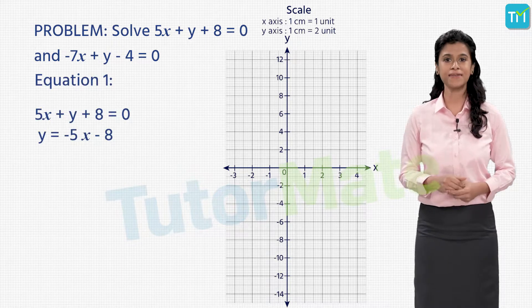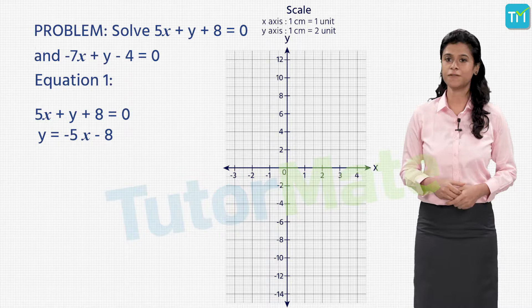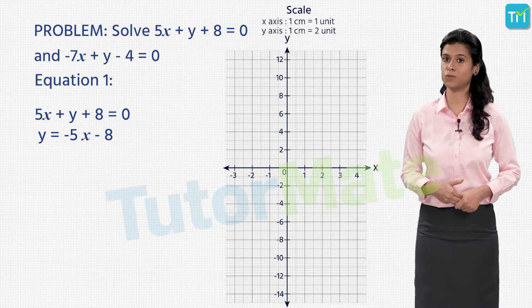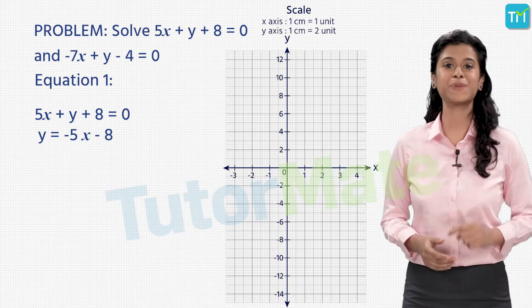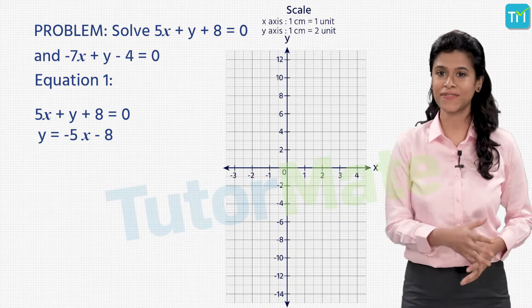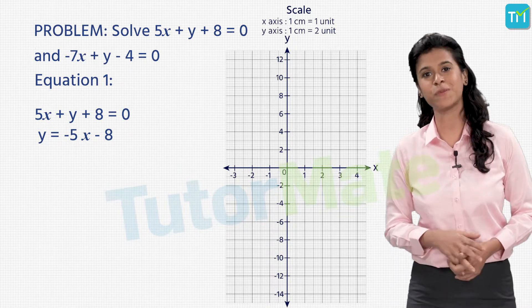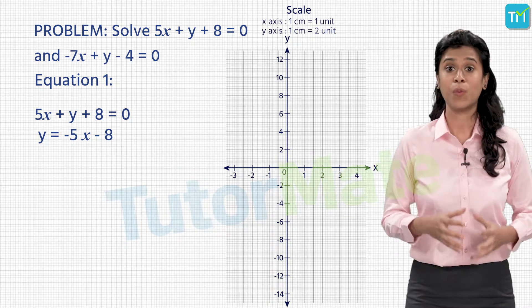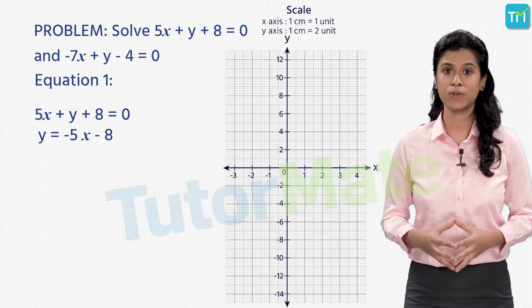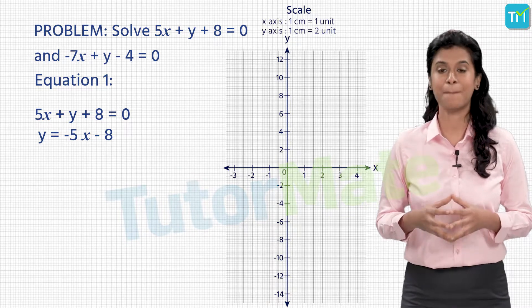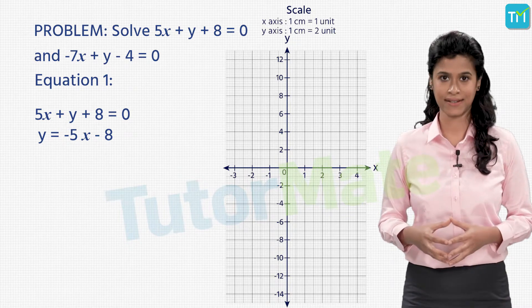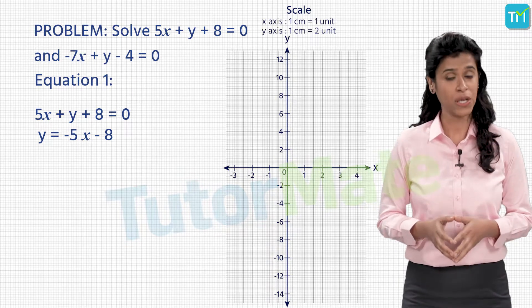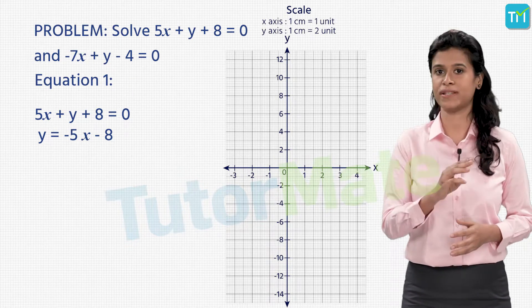Consider the first equation: 5x plus y plus 8 equal to 0. Let's fix y on the left side and take the other two terms on the right side, giving us y is equal to minus 5x minus 8. To draw the graph of this equation we will need at least 3 points.